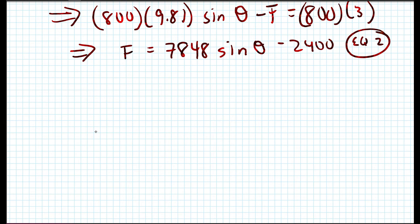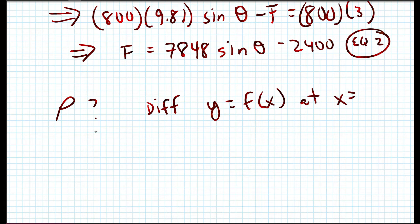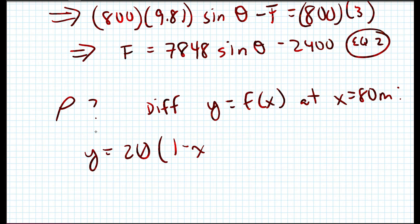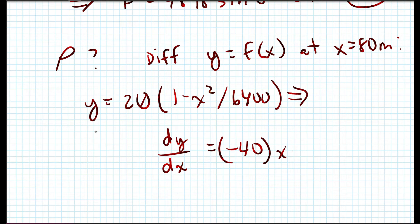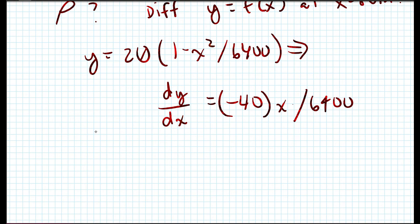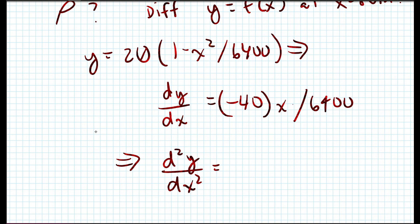For part three, we determine ρ by differentiating y = f(x) at x = 80 meters. Given y = 20(1 − x²/6400), the first derivative is dy/dx = −40x/6400. The second derivative is d²y/dx² = −40/6400.